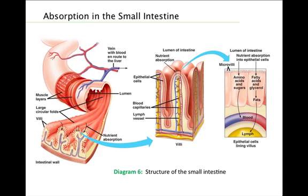The small intestine is well suited for absorbing nutrients, with a lining surface area of roughly 300 square meters — about the size of a tennis court. Around the inner wall are large circular folds and numerous small finger-like projections called villi. Each epithelial cell lining the villi has many tiny surface projections called microvilli, which extend into the lumen and greatly increase the surface area for nutrient absorption. Some nutrients are absorbed by simple diffusion; others are pumped against concentration gradients into epithelial cells.